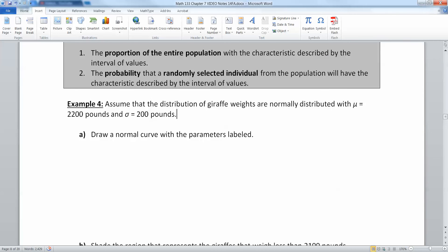They're kind of two sides of the same coin. One is considering it as a proportion of the population, one is considering the probability of an individual. Let's assume that the distribution of giraffe weights are normally distributed with a mean mu equals 2200 pounds and a sigma equal to 200 pounds.